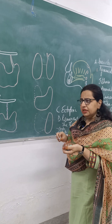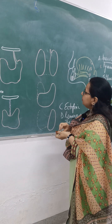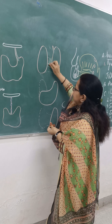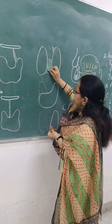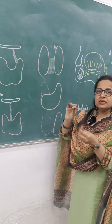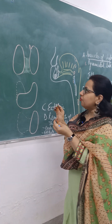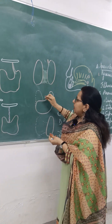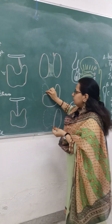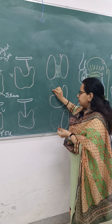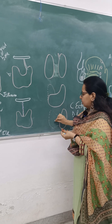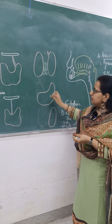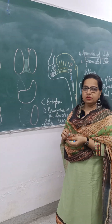Another anomaly is when the isthmus may be completely absent, so the two lobes are present as separate entities not joined together by the isthmus. Either of the lobes may also be absent partially or completely along with the absence of the isthmus. These are the anomalies of shape.